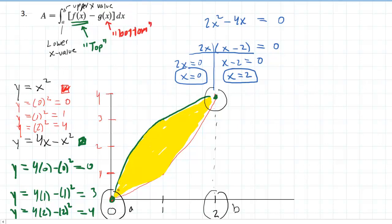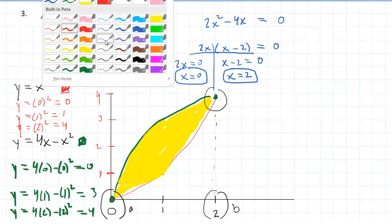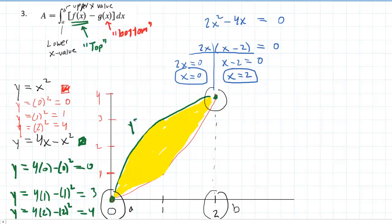And you'll notice that the top function was the function that we colored in green. That was the y equals 4x minus x squared. And then the bottom function is the one that we colored in red. And that's just y equals x squared.